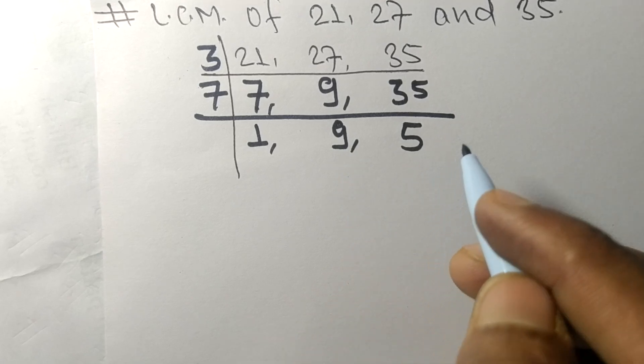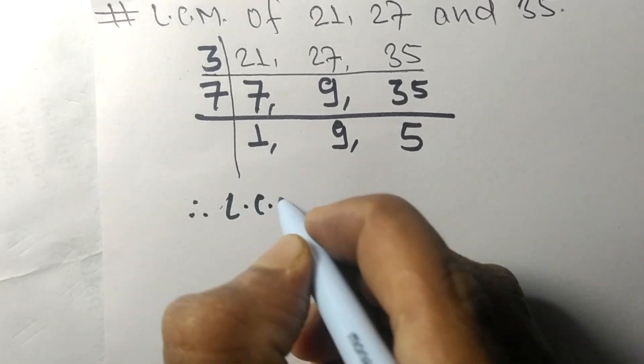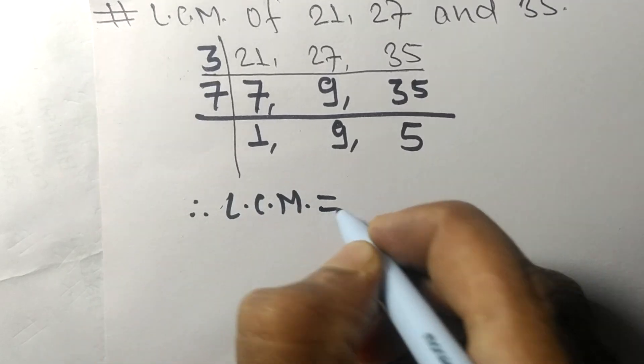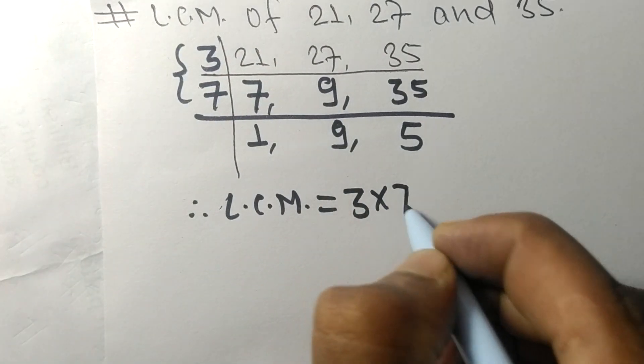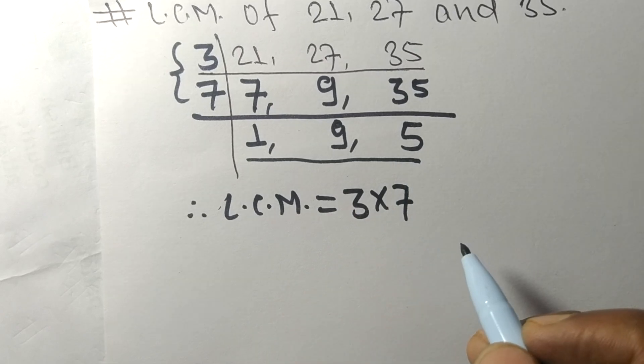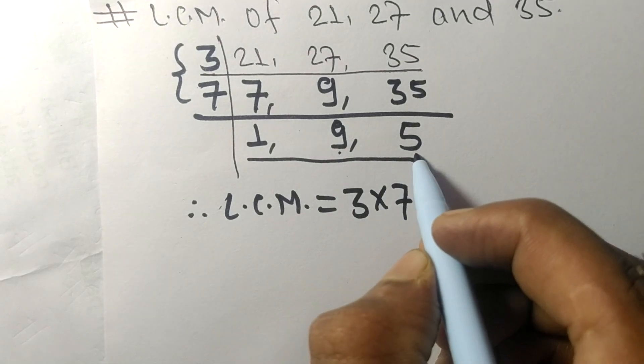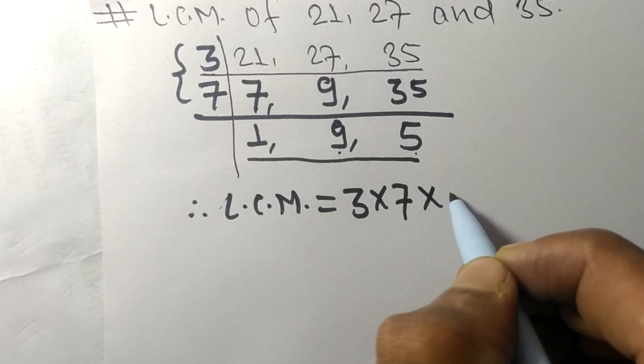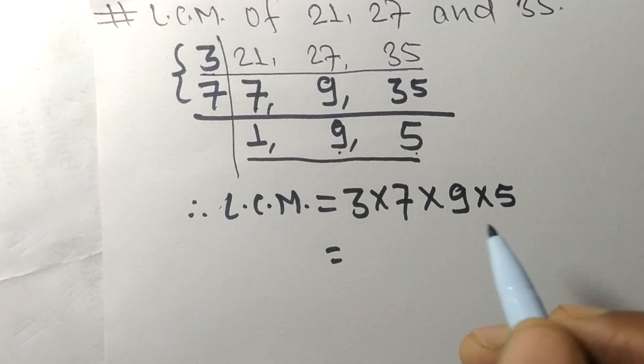Therefore, the LCM is equal to: from this side it is 3 and 7. From this side we choose the numbers greater than 1, that is 9 and 5, so we multiply by 9 and 5.